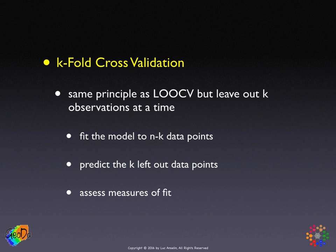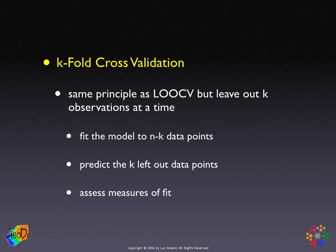K-fold cross-validation is a simple extension of this, which can be more robust and is another safeguard against overfitting. Rather than leaving one observation out, you leave K observations out — maybe you leave 10 observations out. You drop those 10, fit the model on the remaining ones, predict the 10, and average the measure of fit for those predicted values. In general, you fit the model to N minus K data points, predict the K left-out data points, and assess a measure of fit. In the lab, we'll try doing this for our sample data sets.